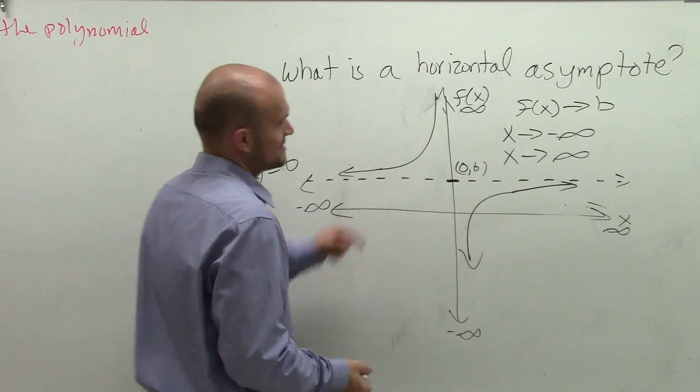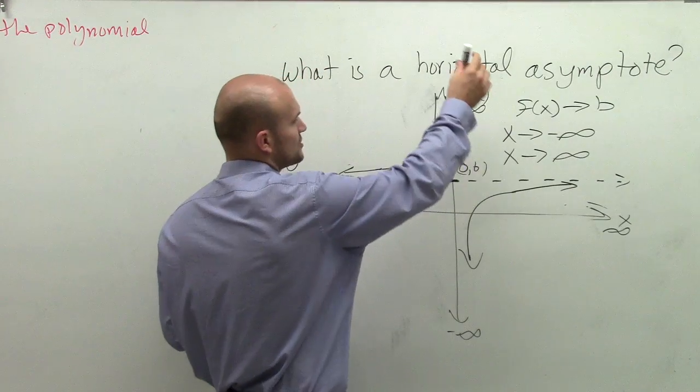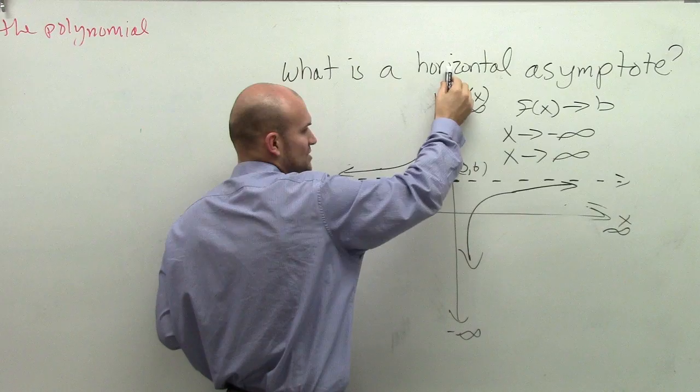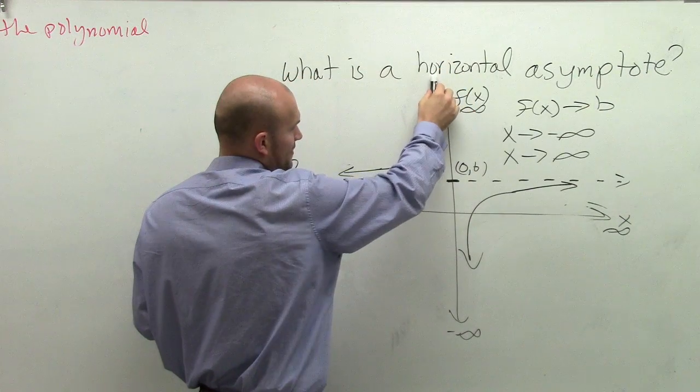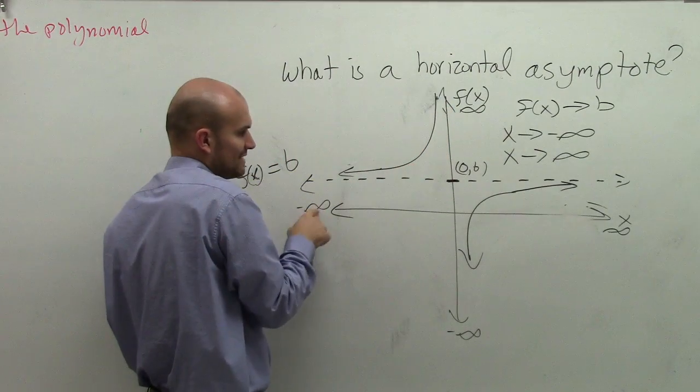So let's look at that. As f of x approaches b, this can be from either direction. Let's say it approaches from the positive direction, from the top. As I approach from the top and get closer to b, my graph takes a turn and starts approaching negative infinity.